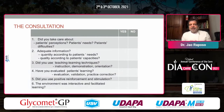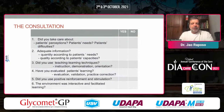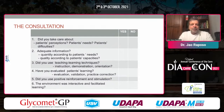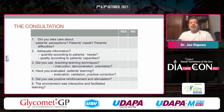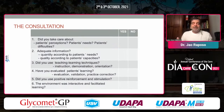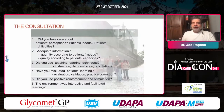We provide a checklist at the end of the consultation for healthcare providers, so they can assess whether they are using therapeutic patient education. The six questions cover: did you address patient perceptions, needs, and difficulties? Did you provide adequate information in the right quantity and quality according to patient capacities? Did you use teaching-learning techniques such as instruction, demonstration, and orientation? Did you evaluate patient learning through re-evaluation, validation, and practice correction? Did you use positive reinforcement? Was the environment interactive and facilitated learning?